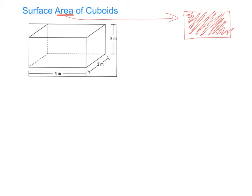Area is always represented by units squared. So if this rectangle was 5 metres by 3 metres, the area would equal 5 multiplied by 3, which equals 15 metres squared. It's always relating to squared and not cubed — cubed units relate to volume, which is the space inside a 3D shape.